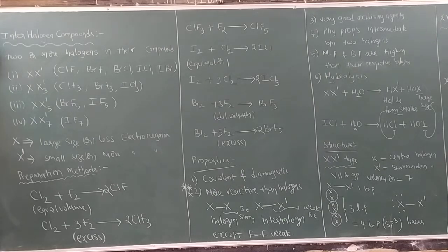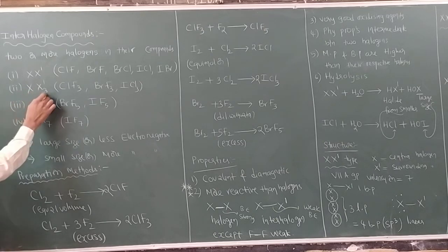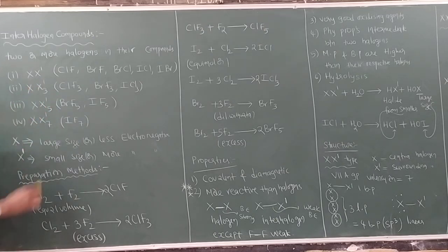There are four different types of interhalogen compounds: XX', XX'3, XX'5, and XX'7.